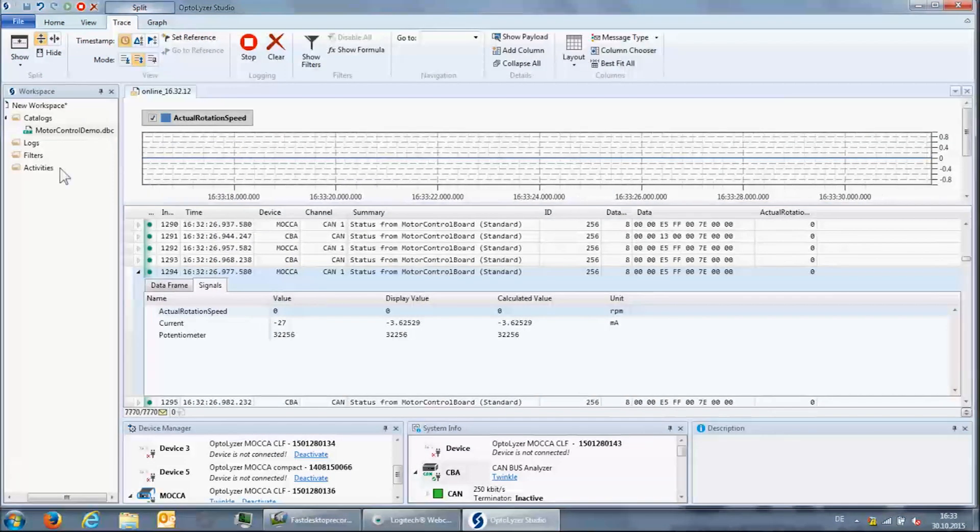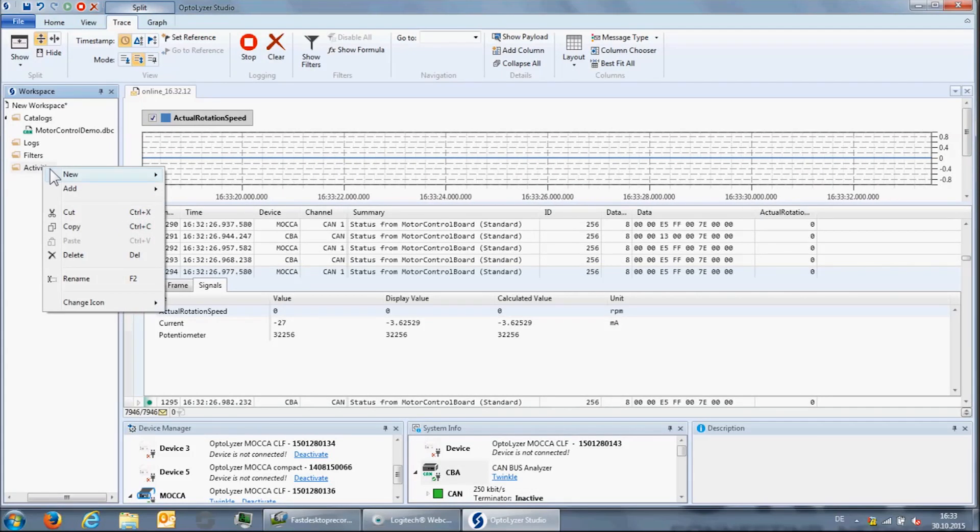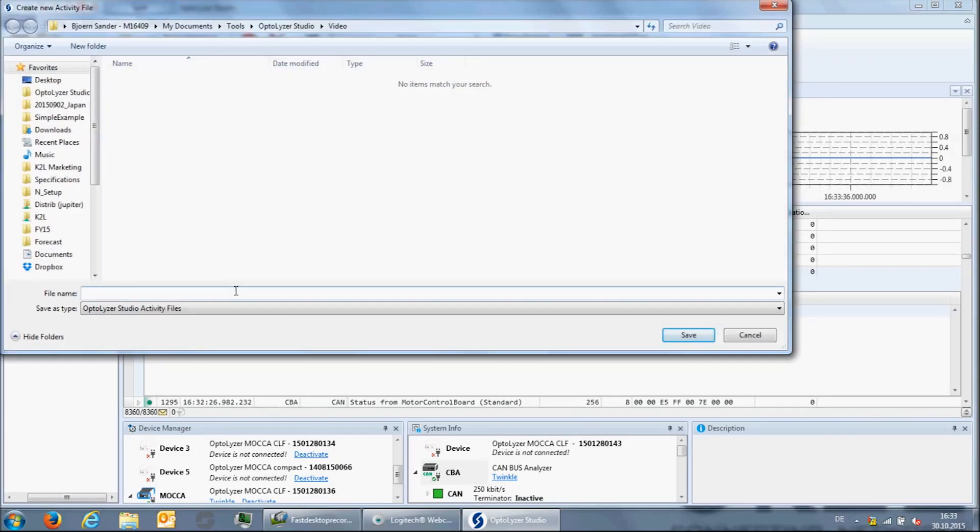We can quickly confirm that when we switch to the camera that records the motor control setup. In order to start the motor, we have to send a control message to the motor control board. In the Optalyzer Studio, this is done with the help of activities. So we will first create an activity file.